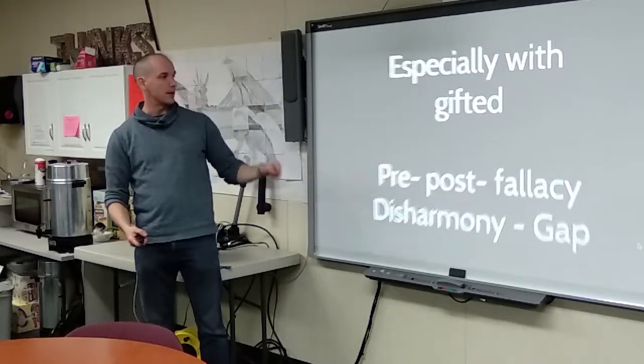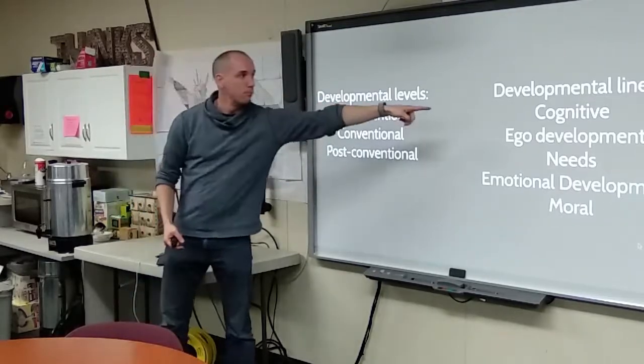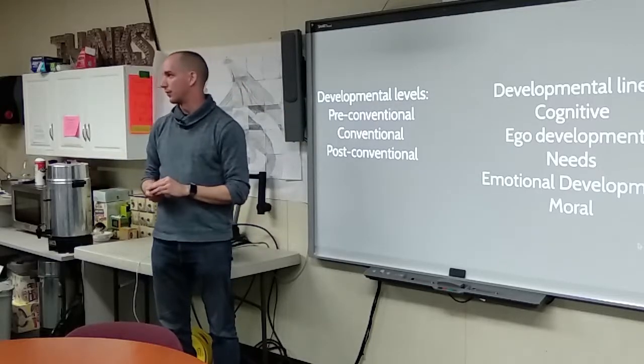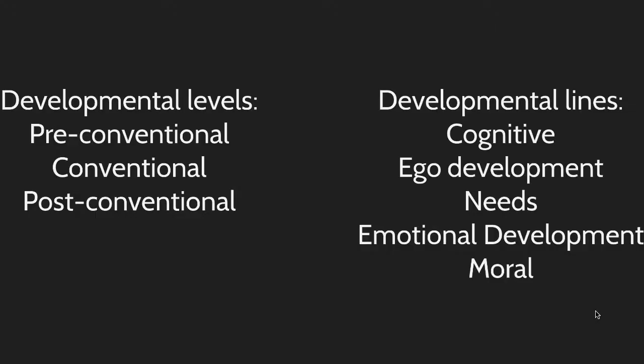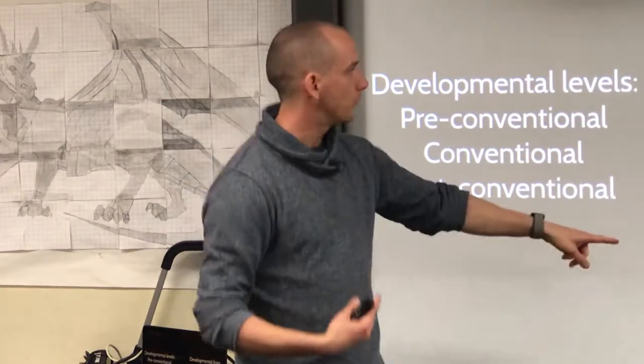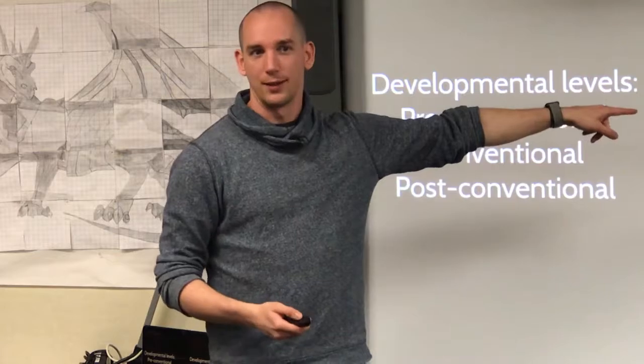This is what you see with gifted kids in some cases. There's this disharmony and this fallacy, because most often cognitively they're post-conventional — they know how to think logically and almost beyond logically. But if you talk about ego development or moral development, sometimes they're pre-conventional. They don't even know how it's done, they don't know how to control themselves — but they will tell a cognitive story to go with it.